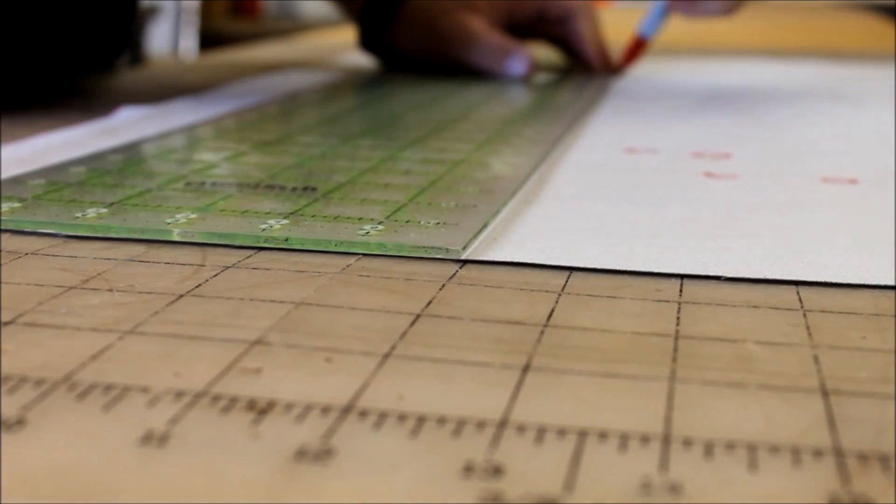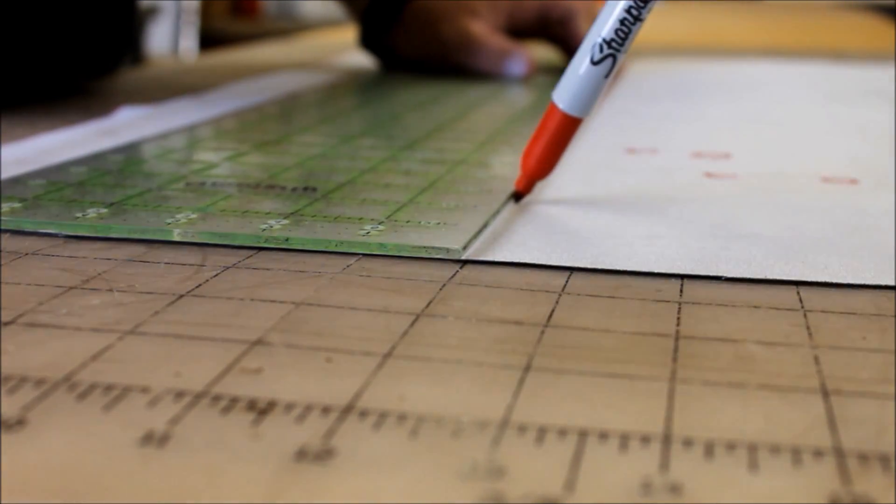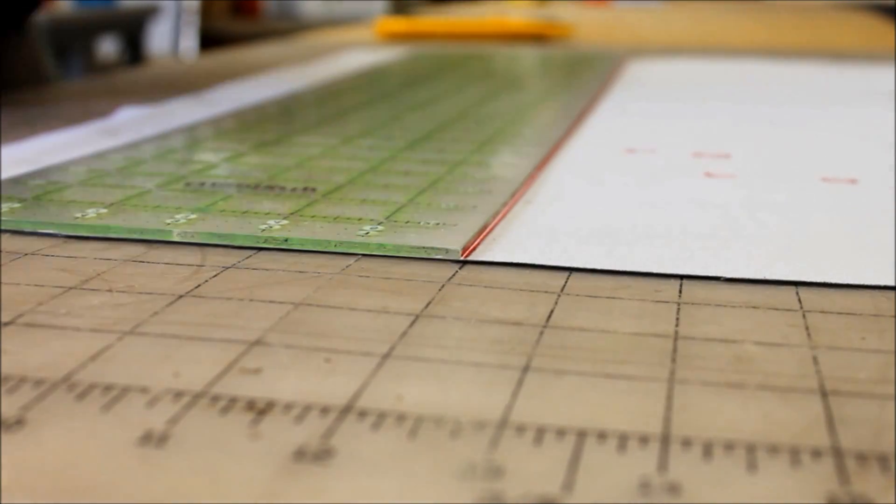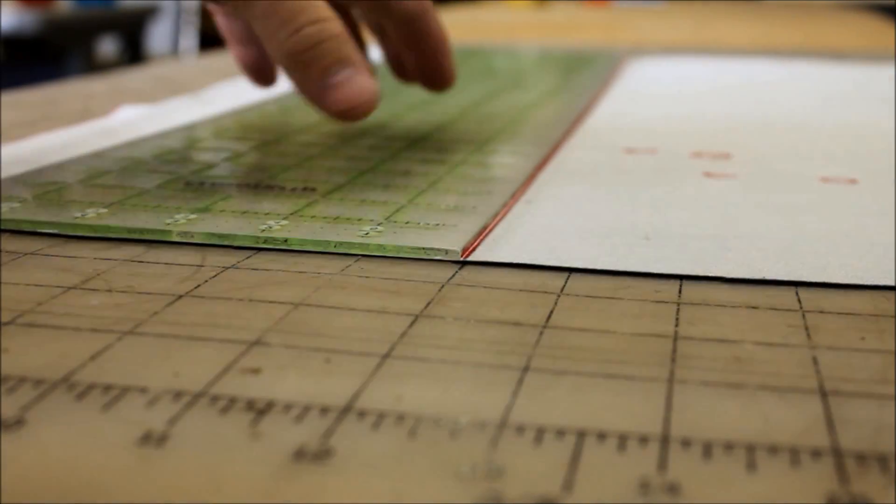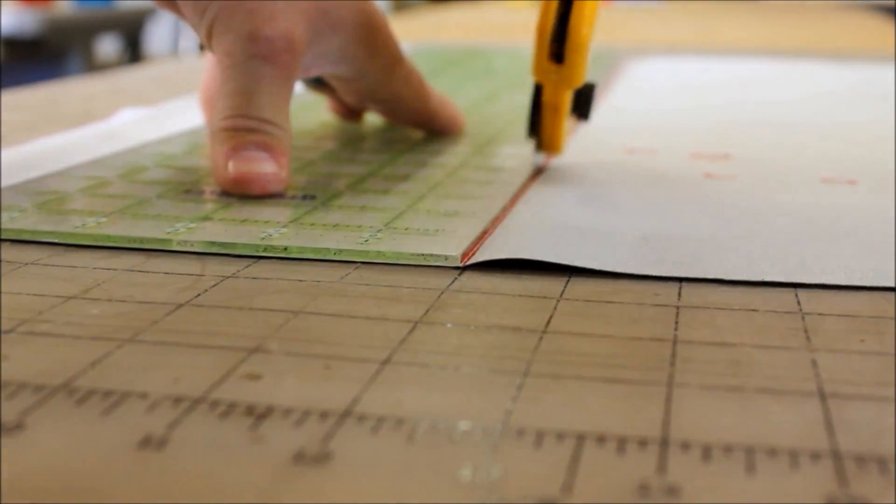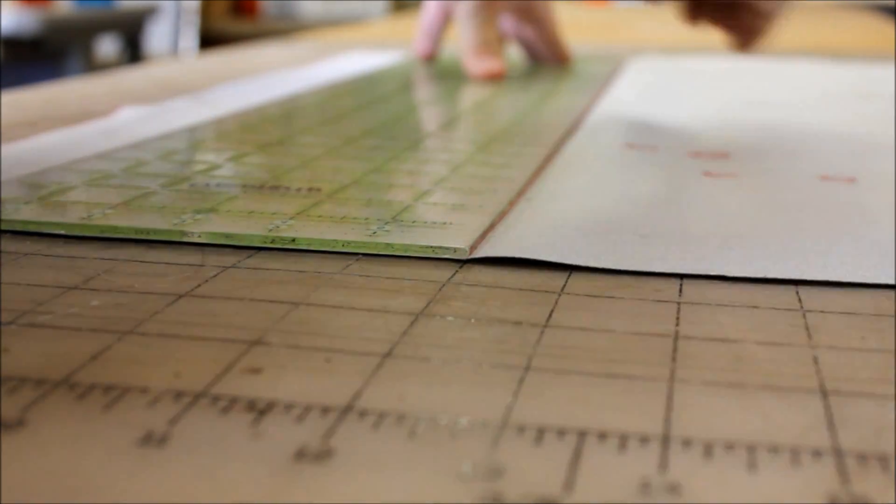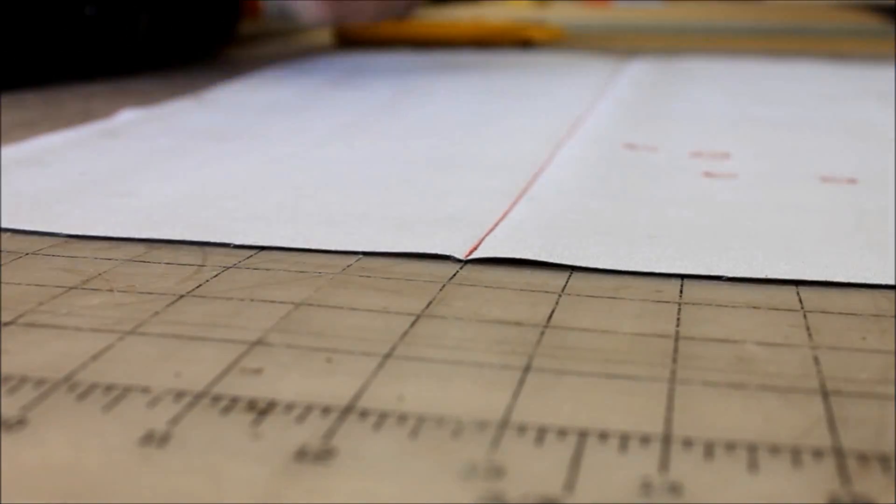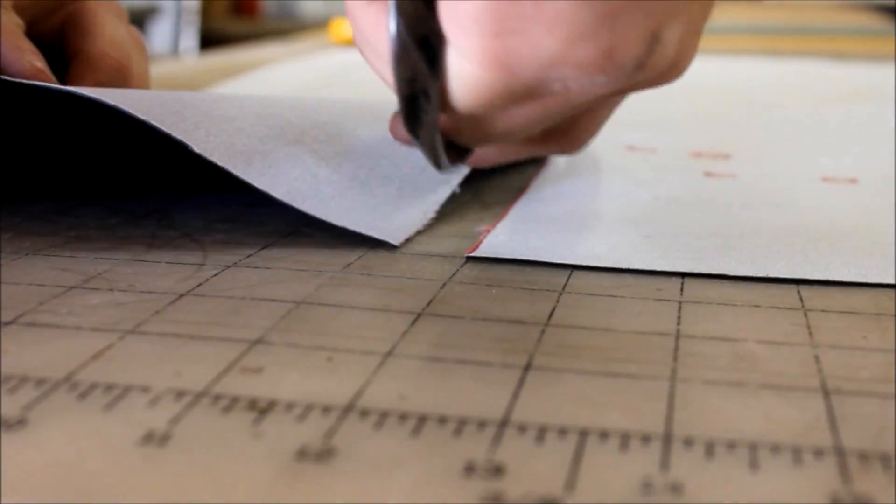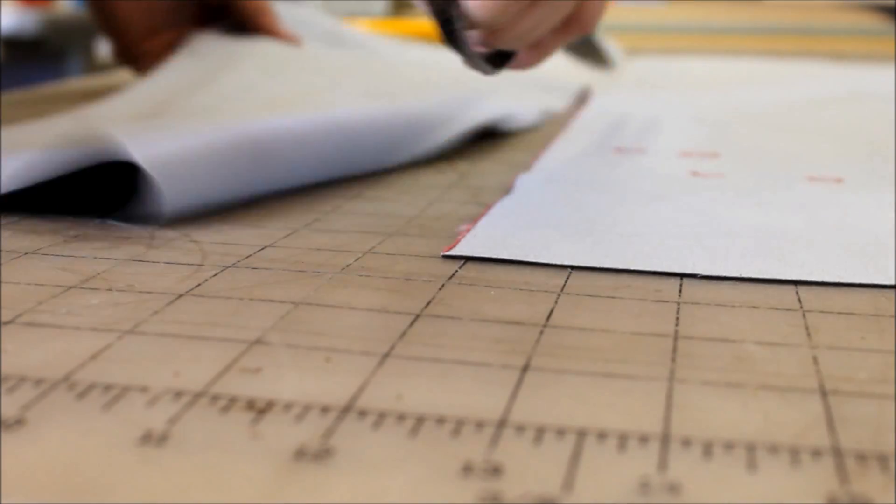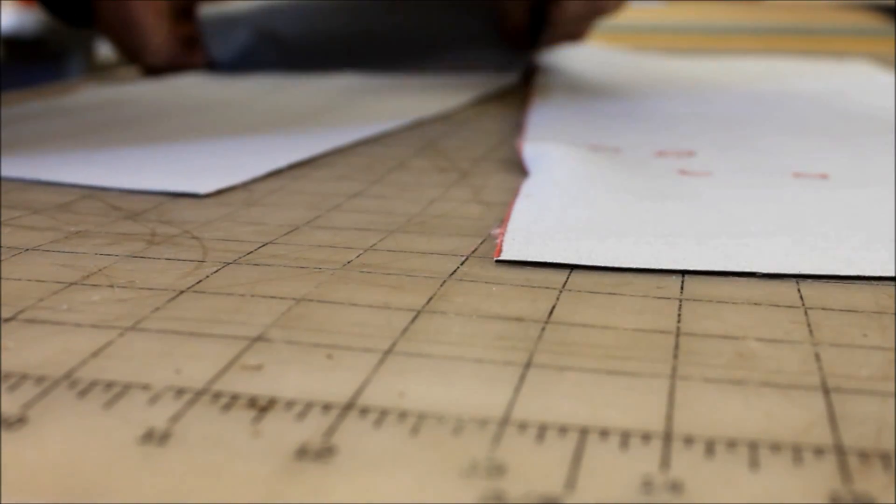Here I'm starting to lay out my pattern. Now I need to cut this 3 quarters of an inch wider than I want it to, than my finished dimension, because I'm adding a 3 eighths inch seam allowance on each side. So there's going to be one long center panel that I'm cutting here. I'm cutting it exactly 3 quarters of an inch wider than I want it to end up being when I'm done sewing it.